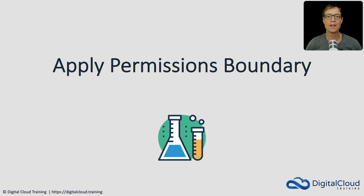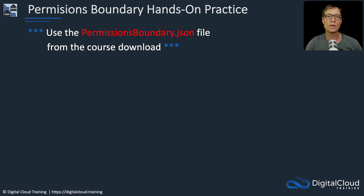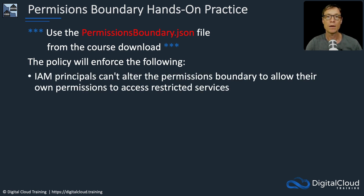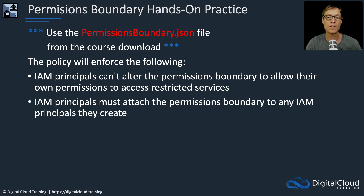Welcome to another hands-on lesson. In this one we're going to apply a permissions boundary and look at how we can prevent privilege escalation. The policy will ensure IAM principals will not be able to alter the permissions boundary to allow their own permissions to access restricted services. This is about restricting their ability to go past the permissions they already have.